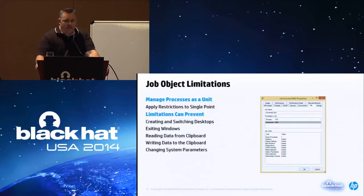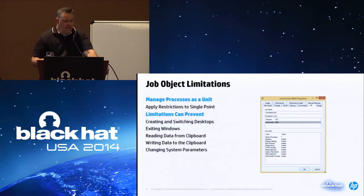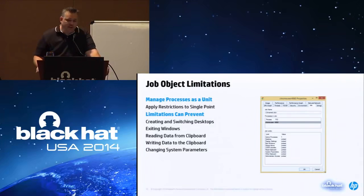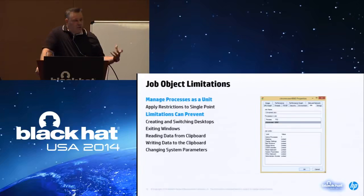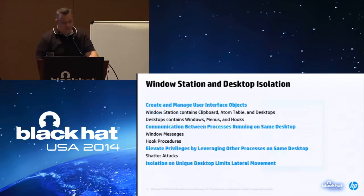The next recommendation LeBlanc suggested was to use a job object — a mechanism in the operating system to manage a group of processes as a single unit and apply restrictions to all associated processes. Limitations include restricting the number of active processes: in Google Chrome's job object they restrict active processes to one. Other limitations include creating and switching desktops, exiting windows, reading and writing from the clipboard, and changing system privileges. Google Chrome applies almost every restriction available to the job object, as does Adobe Reader. Internet Explorer does not use a job object at all — I'm sure they have other restrictions, but that's what they do.